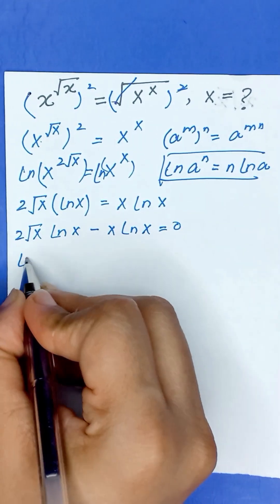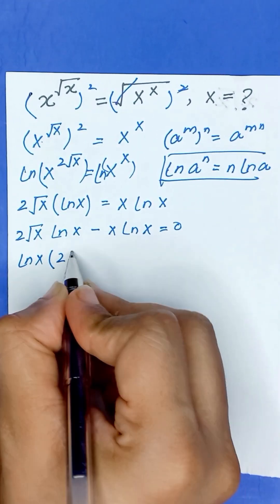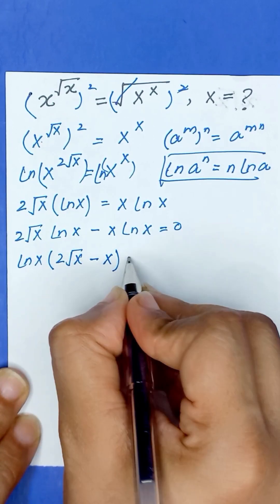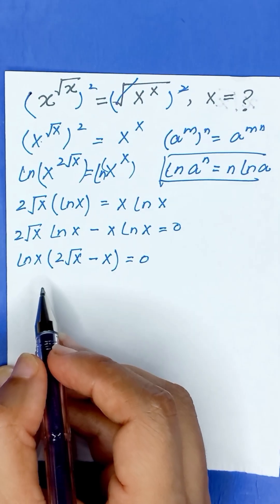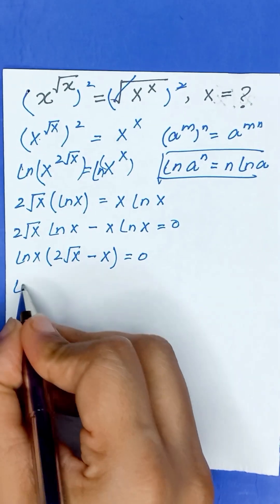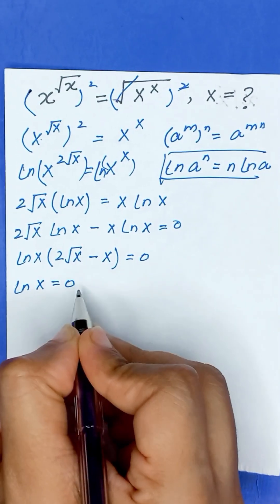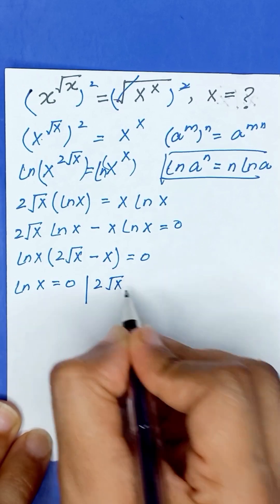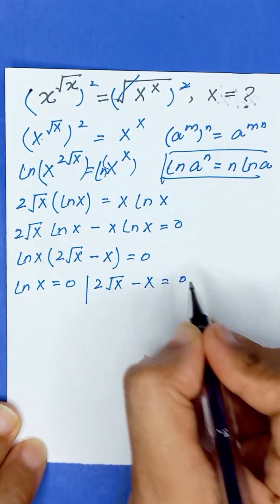From these two terms, ln of x is common, so it will become ln of x times (2 times square root of x minus x) is equal to 0. Here we have two cases: ln of x is equal to 0, and 2 times square root of x minus x is equal to 0.